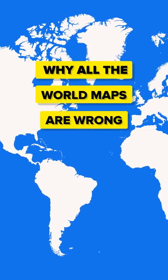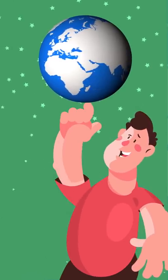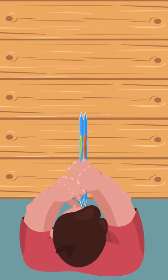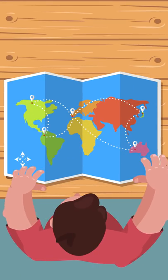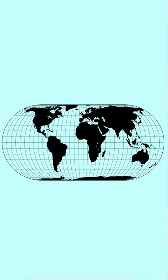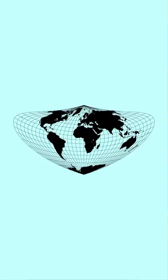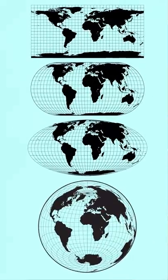Here's why all the world maps are wrong. The Earth, as we hope most of you will acknowledge, is a sphere. However, when you think of maps you're probably picturing a flat rectangle of paper. This is the heart of the problem. It's impossible to convert a sphere into a flat plane like this without some form of distortion. As a result, the shapes and positions of continents suffer.